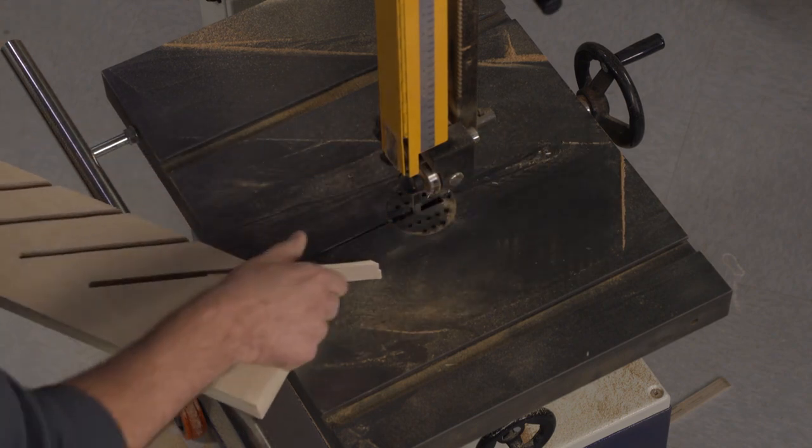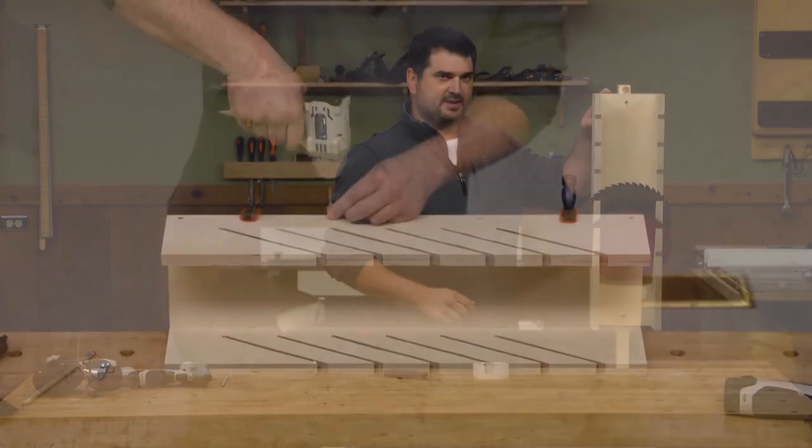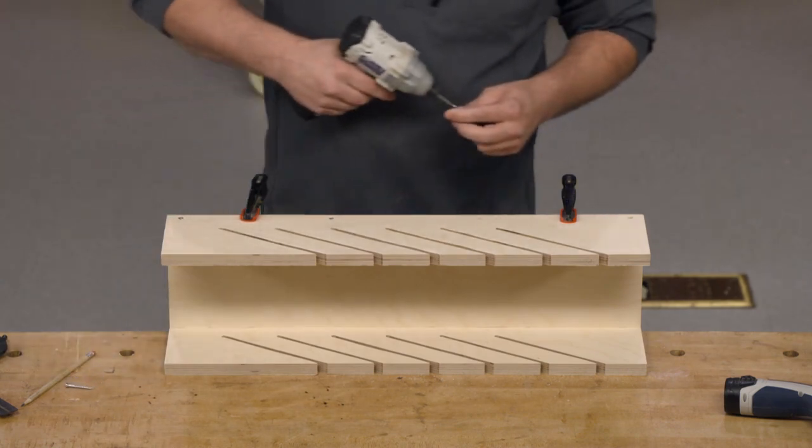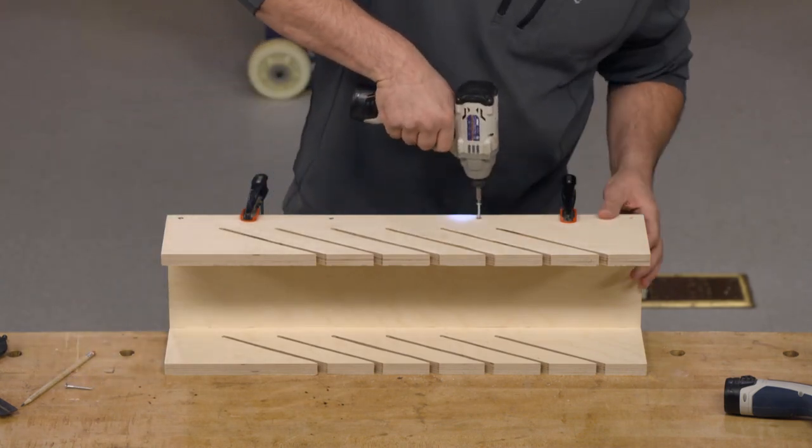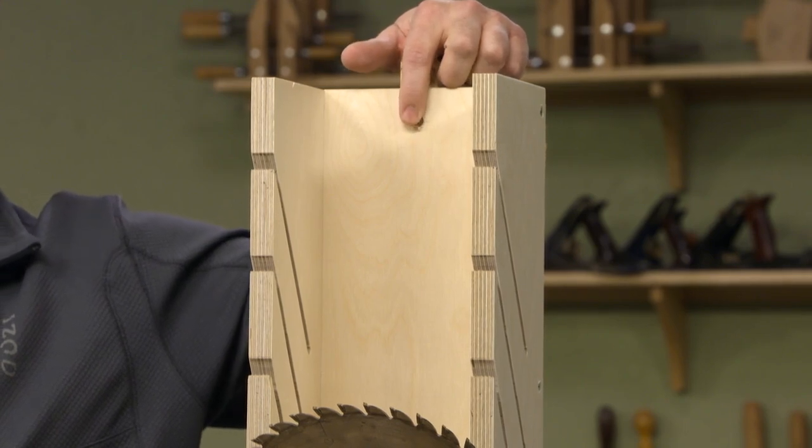So once you have all of the waste of your slots removed, you're ready to attach it to a three-quarter inch plywood backer board. I just did that with some screws here on the back. And then you can just screw it right to a stud in your wall right next to your table saw in the shop.